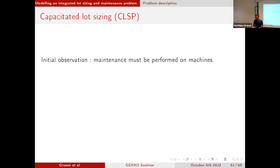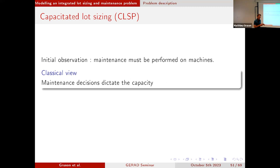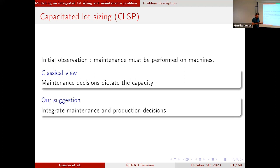A classical view would be to say if I perform some maintenance operations, it will affect my capacity — I will have lower capacity because machines are being maintained. Our suggestion is to integrate lot sizing decisions with maintenance decisions to know when the best time to perform maintenance operations would be and to have a certain capacity available. This is the initial idea of the project.